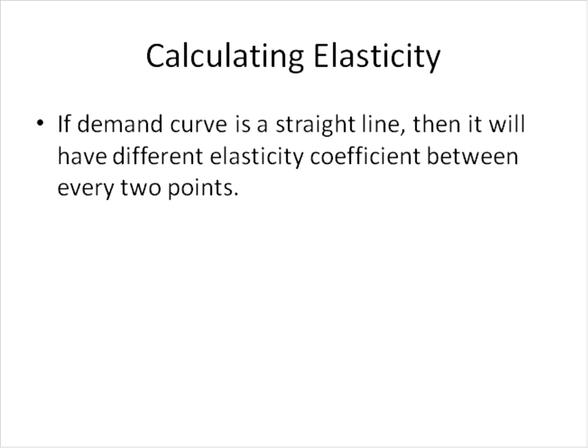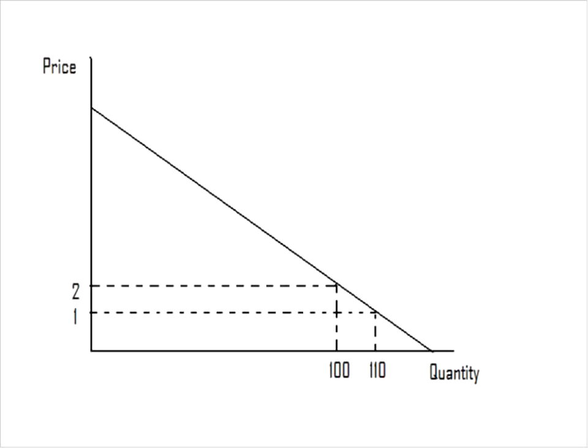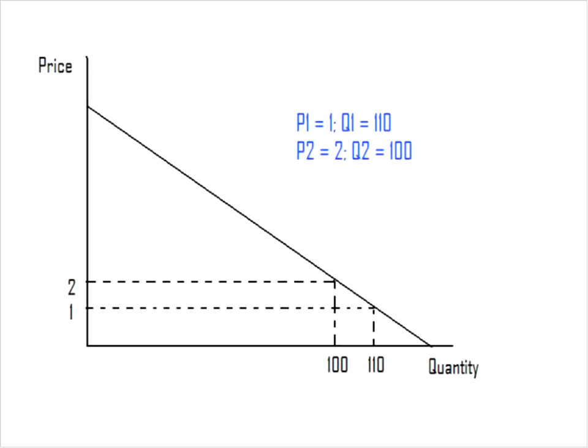If we're dealing with simple straight-line demand curves, then our elasticity coefficient will be different between every two points that we measure, and that has interesting implications. We use the midpoint method for calculating elasticity between two points on the demand curve — this is how we commonly do it in Econ 101. We're taking an average of positions between two points. Here's the demand curve with two prices and two quantities plotted. I'm going to make the lower price my P1 and see what happens when the price is raised from 1 to 2, recording the values accordingly.